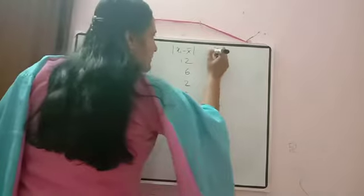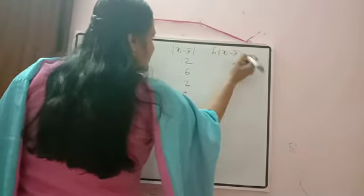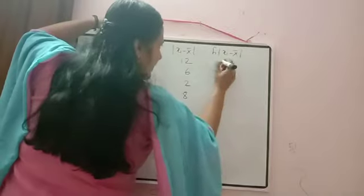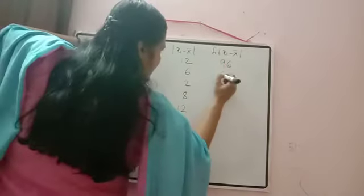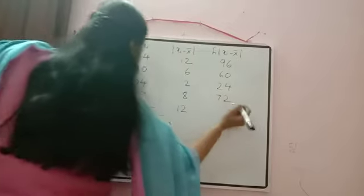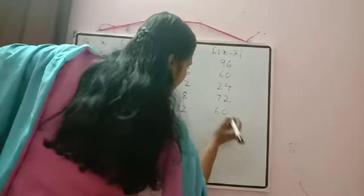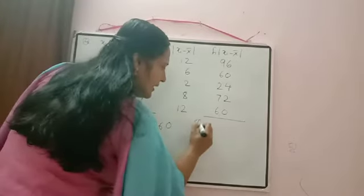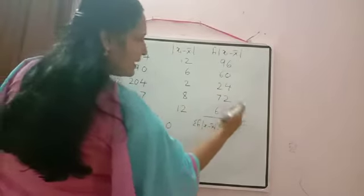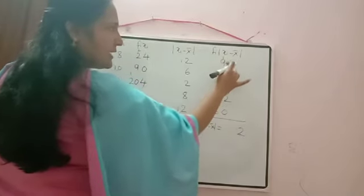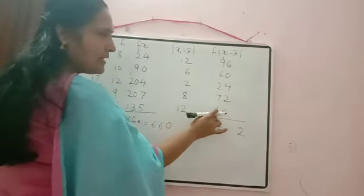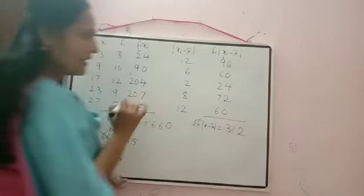Next column: fᵢ × |xᵢ − x̄|. Computing: 8×12=96, 10×6=60, 12×2=24, 9×8=72, 5×12=60. Now add: 96+60=156, +24=180, +72=252 — let me recompute: 6+0+4+2+0=12 (units, carry 1); 9+6+2+7+6=30+1=31... Adding directly: 96+60=156, +24=180, +72=252, +60=312. So Σfᵢ|xᵢ − x̄| = 312.